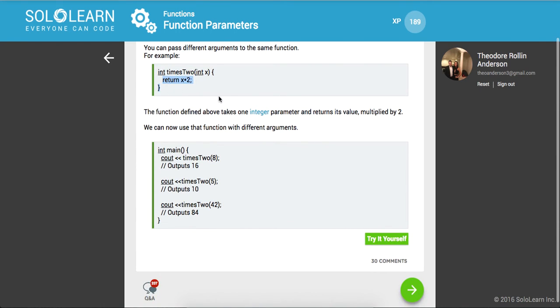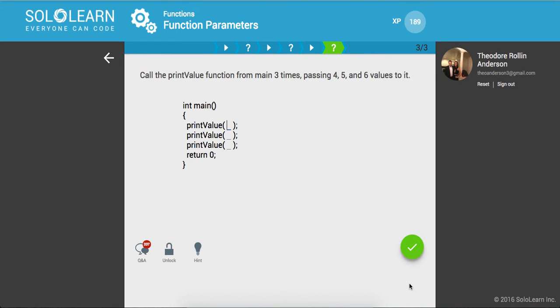So call the print value function from main three times, passing 4, 5, and 6. All right cool.